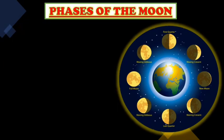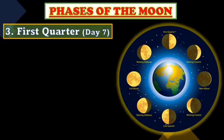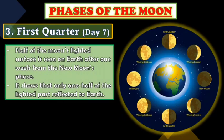Next is the First Quarter, on day seven. Half of the Moon's lighted surface is seen from Earth after one week from the New Moon phase. Only one half of the lighted part is reflected to Earth, appearing as a D-shape — half of the light is now visible.